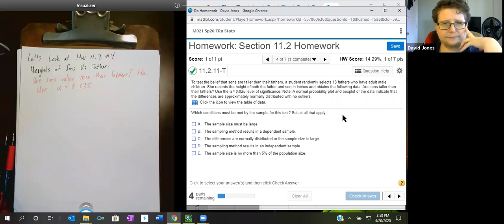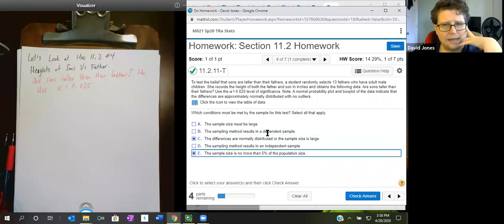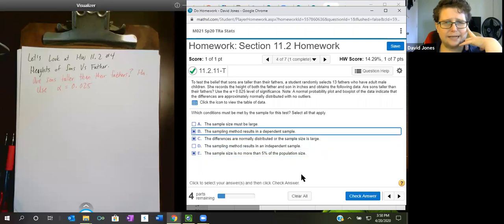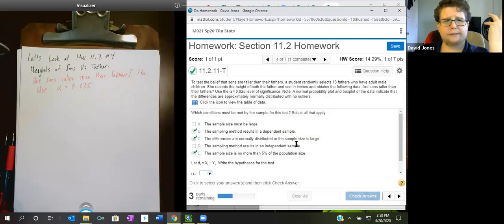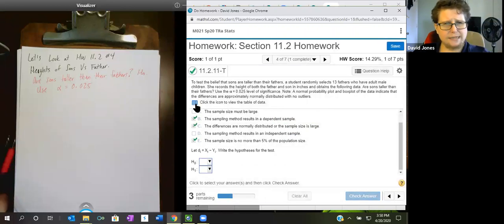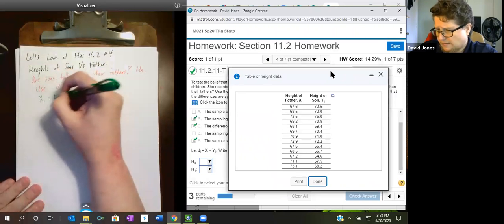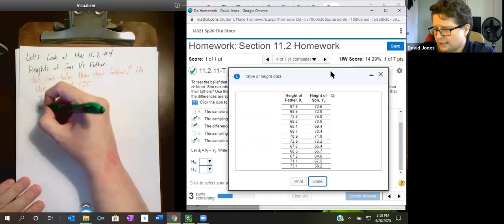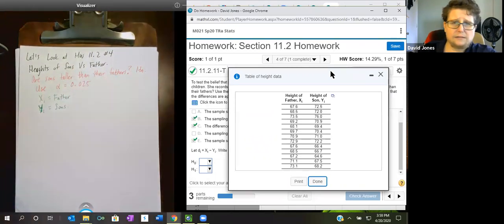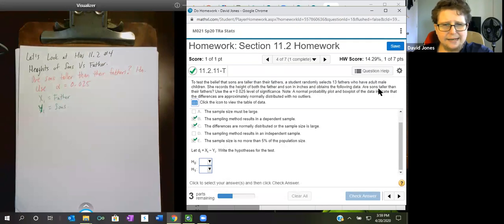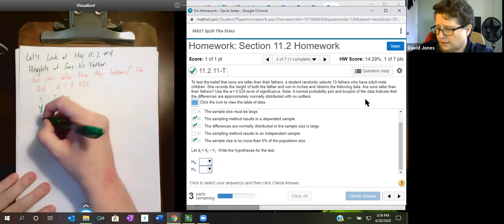Which conditions must be met by the sample for this test? Select all that apply. We want the differences are normally distributed or the sample size is large. And we have that here. The sample size we always want is no more than 5% of the population size. And this is a paired test. So the results must be dependent samples. So let's see what they labeled the stuff. X1 is fathers. X2 or Y1 is sons.